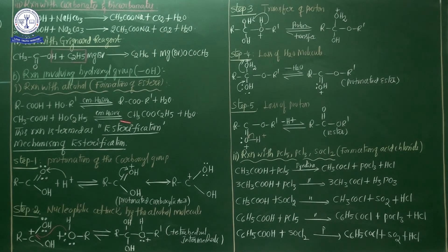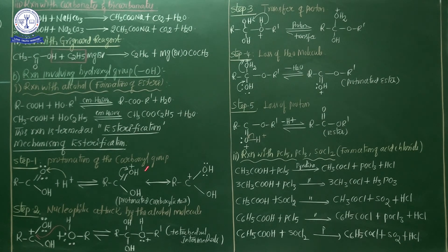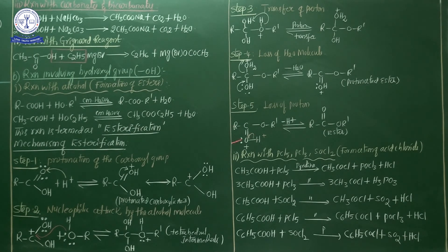My dear students, from the chemical properties of carboxylic acid, four categories are involved. Already successfully completed: first category — reactions involving proton; second — reactions involving hydroxyl group, with only two examples completed. The remaining examples will be continued in the next class — chemical properties of carboxylic acid, part 2. Chemical properties of carboxylic acid, especially esterification, are very, very important.